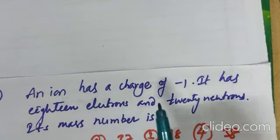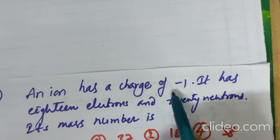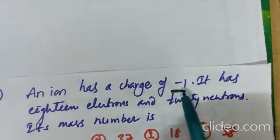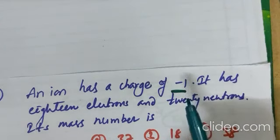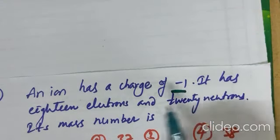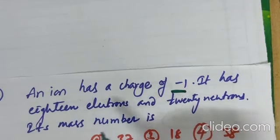This is very simple one. An ion has charges minus 1. Suppose, you are treated as one ion having charges minus 1. It has 18 electrons. Means, after minus 1, it has 18 electrons. And, 20 neutrons. Its mass number is what?